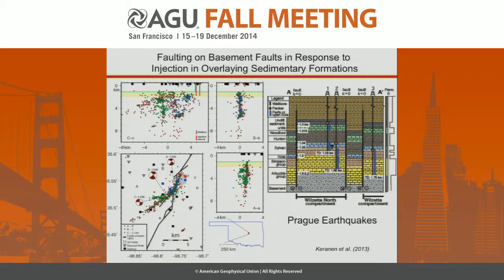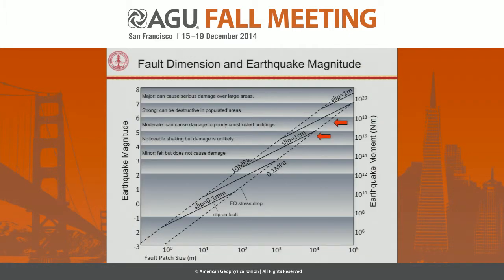In the Prager earthquake sequence — this is Katie Karana's work, the former slide was from Steve Horton — it's really not clear whether the injection into the Wilzetta well, or injection in wells surrounding the fault, or whether this was a natural earthquake. But if it was injection-induced, it was another case in which injection into the Arbuckle formation clearly induced faulting down into the basement. The largest earthquake was 5.7, about 4.7 in the case of the Guy sequence. Earthquake scaling relations simply show that to get earthquakes of magnitude 4.7 to 5.7, you're dealing with slip on faults that are 10 to tens of kilometers in extent — you have to be involving basement faults.